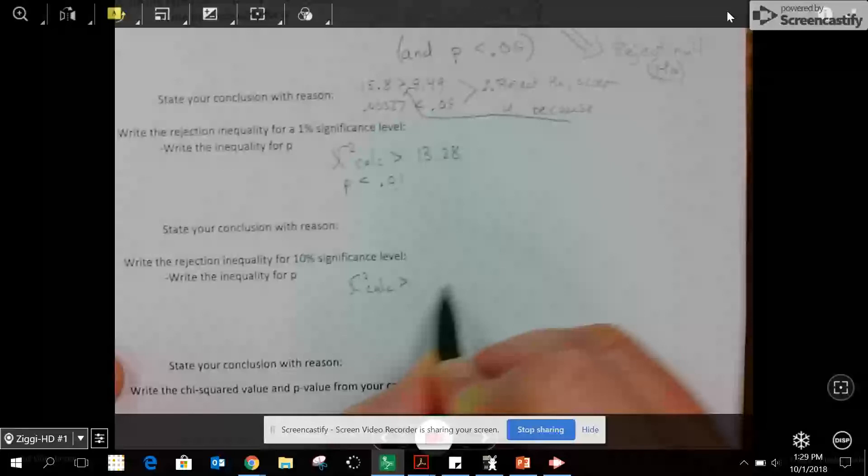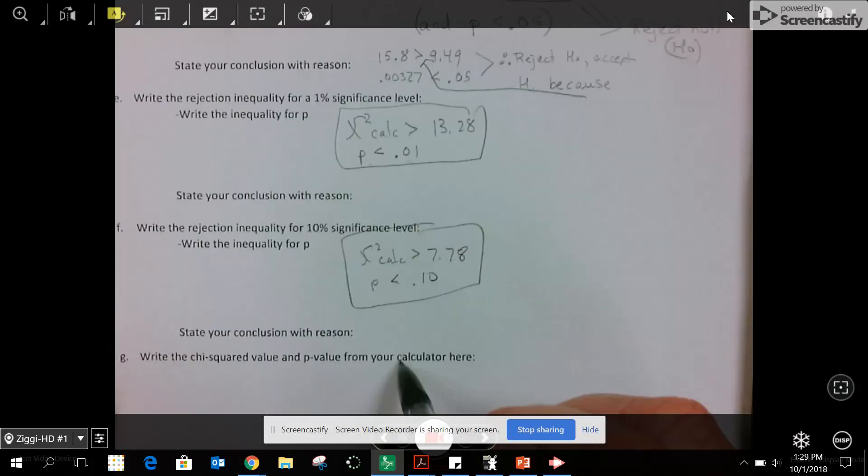Our answer, whenever it says make a conclusion, is always reject or fail to reject. We don't say accept. In the end, if we reject, we accept H1. If we fail to reject, we accept H0.